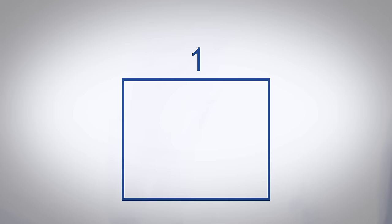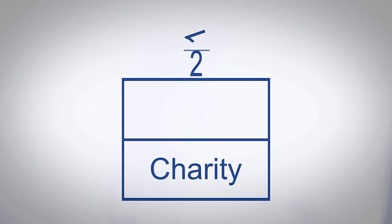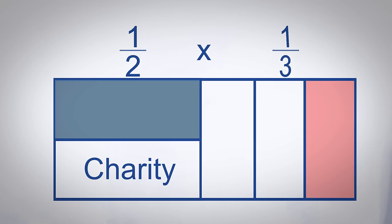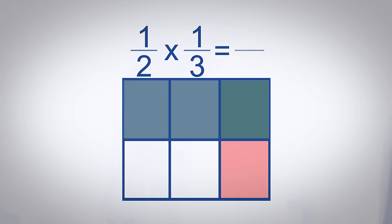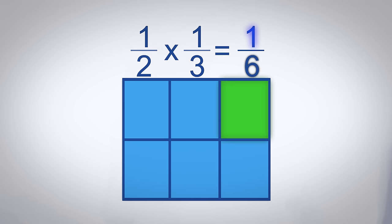When we need to multiply two fractions, this is our reaction. Multiply the numerators, then multiply the denominators.